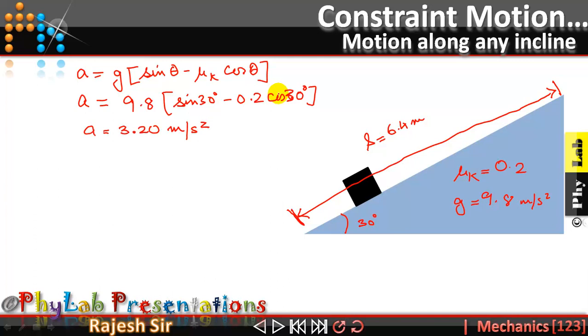Now they want us to find out the time taken by this block to come down the incline. So you know the equation for displacement happens to be S is equal to ut plus half at square.